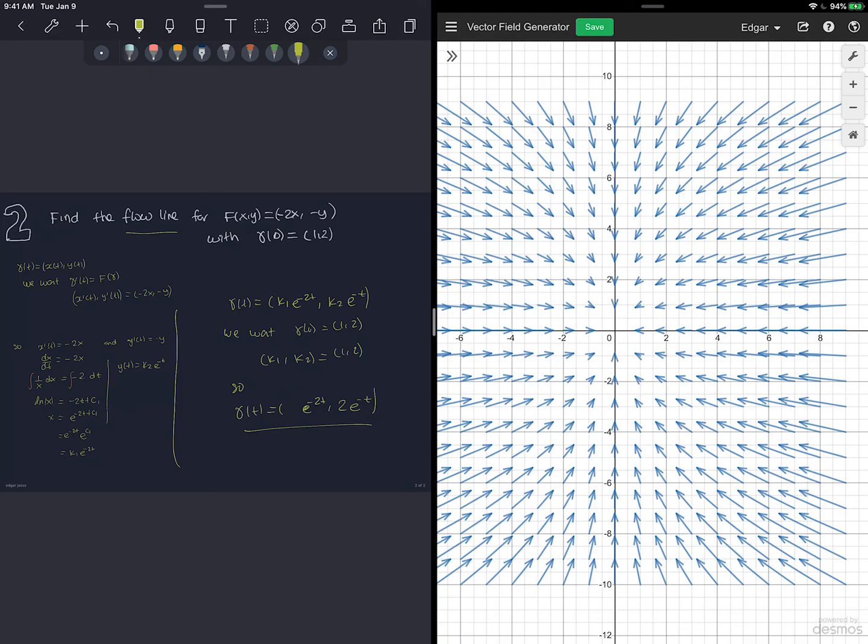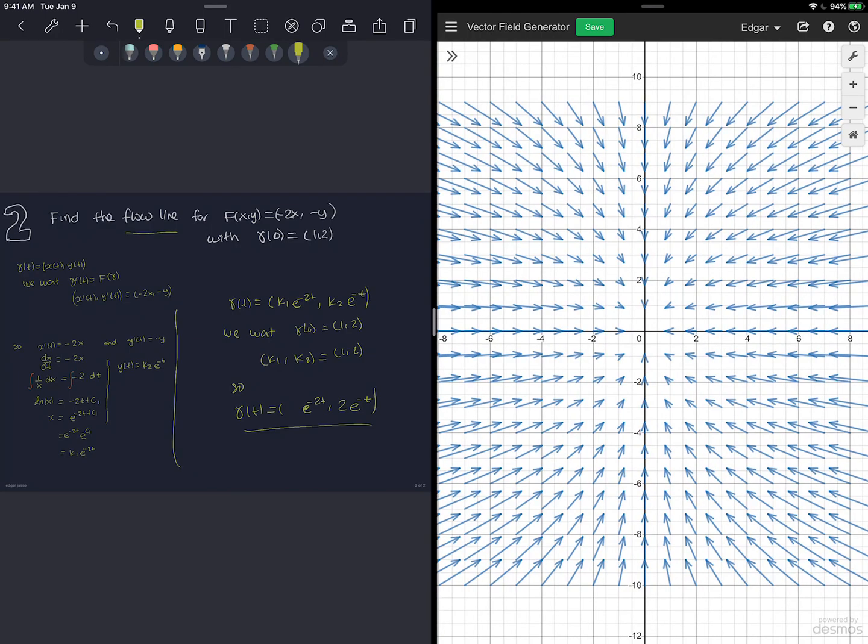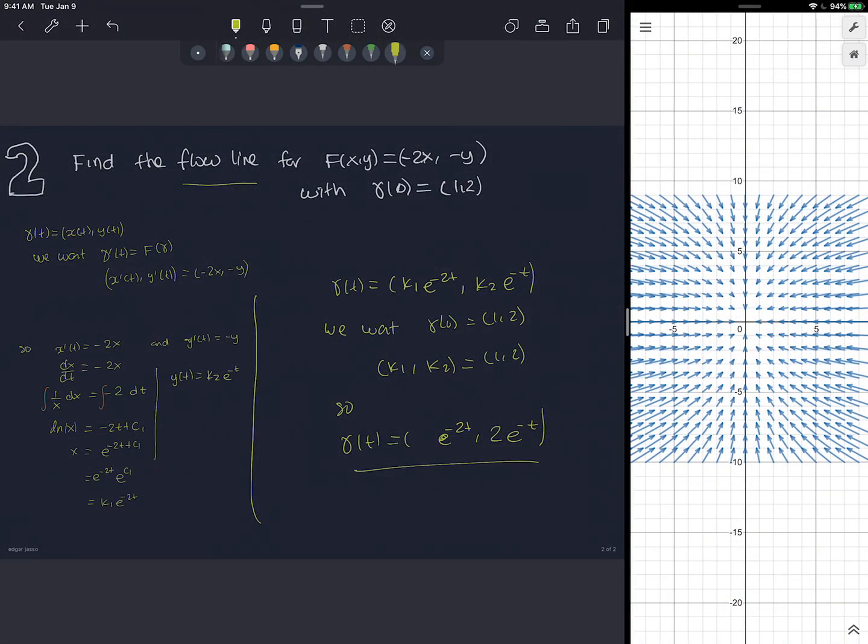That's the curve we've found. The one that has these arrows as its derivatives. So here are my simple examples to find flow lines.